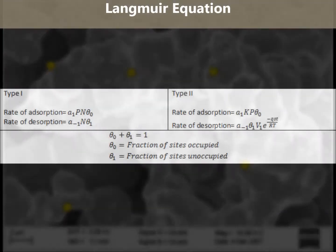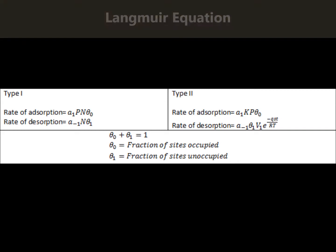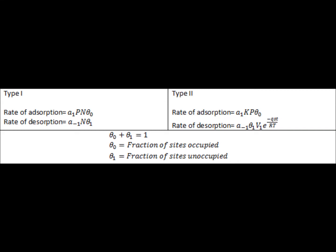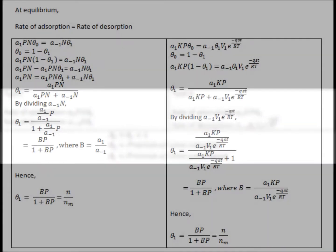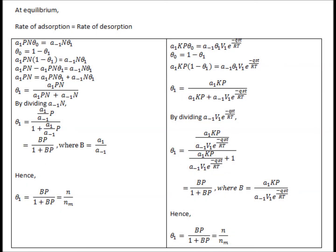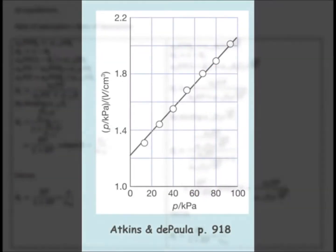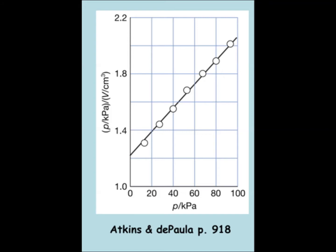This is the Langmuir equation. They are classified into type 1 and type 2. Both finalized equations are basically the same. This is the adsorption isotherm type 1 and type 2 graph.